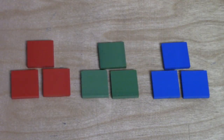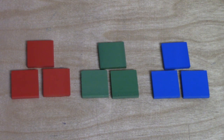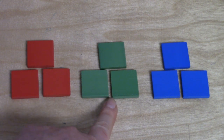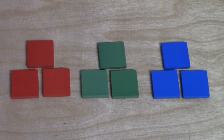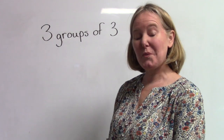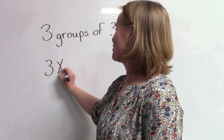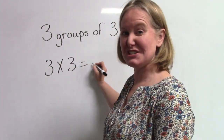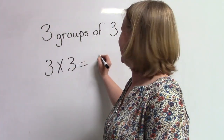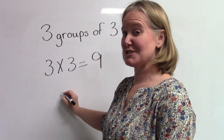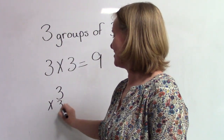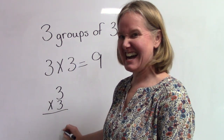How many groups of three do we have now? We have three groups of three. Let's count these by three: three, six, nine. Three groups of three is nine. We just looked at three groups of three — three groups of three equals nine. We can also write this: three groups of three equals nine.